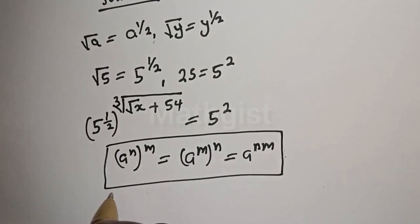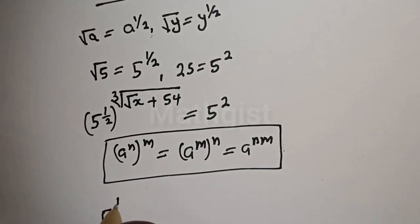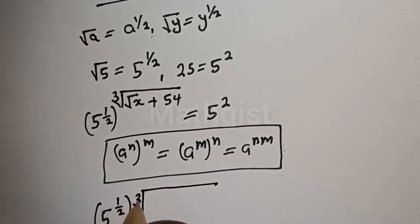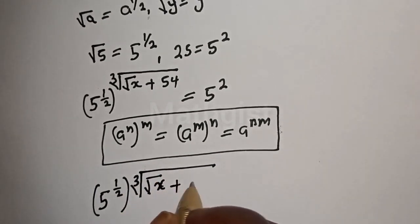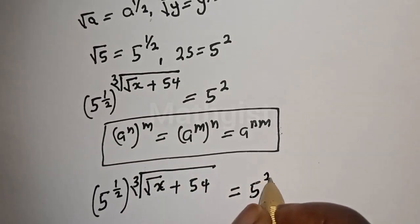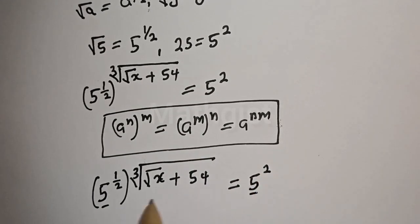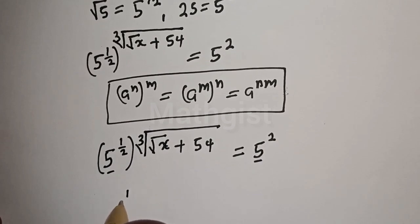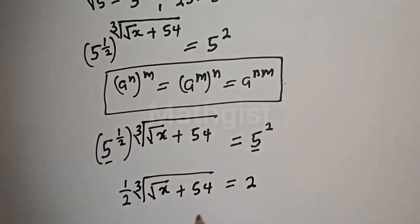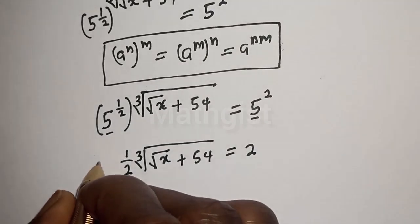So the whole expression becomes five raised to power one over two times cube root of square root of s plus 54, is equal to five squared. Since they have the same base five, we work with the exponents. The exponent equation is: one over two times cube root of square root of s plus 54 equals two.